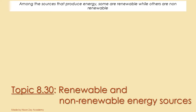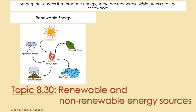For example, hydropower energy which we use in dams produces electrical energy. Even if the water is used, it can be used again. So this is what we call renewable energy resources — sources that can be used again and again.